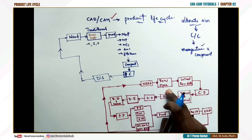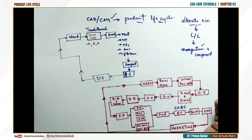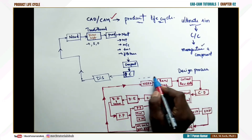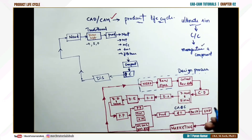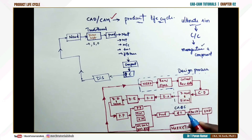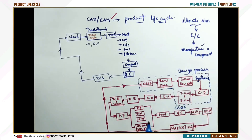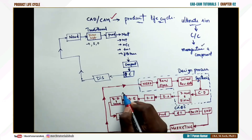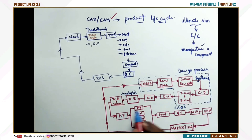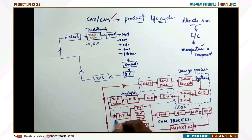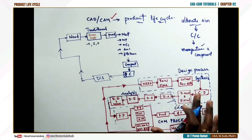To summarize the zones: the need, requirements, specifications, data collection, conceptual design, and design modeling and simulation area falls under synthesis. The analysis zone covers design analysis through evaluation. The complete CAM process — from process planning through packing — covers the manufacturing side. If you understand all these steps, it covers your complete syllabus: about two and a half units for design and two and a half units for the CAM process.